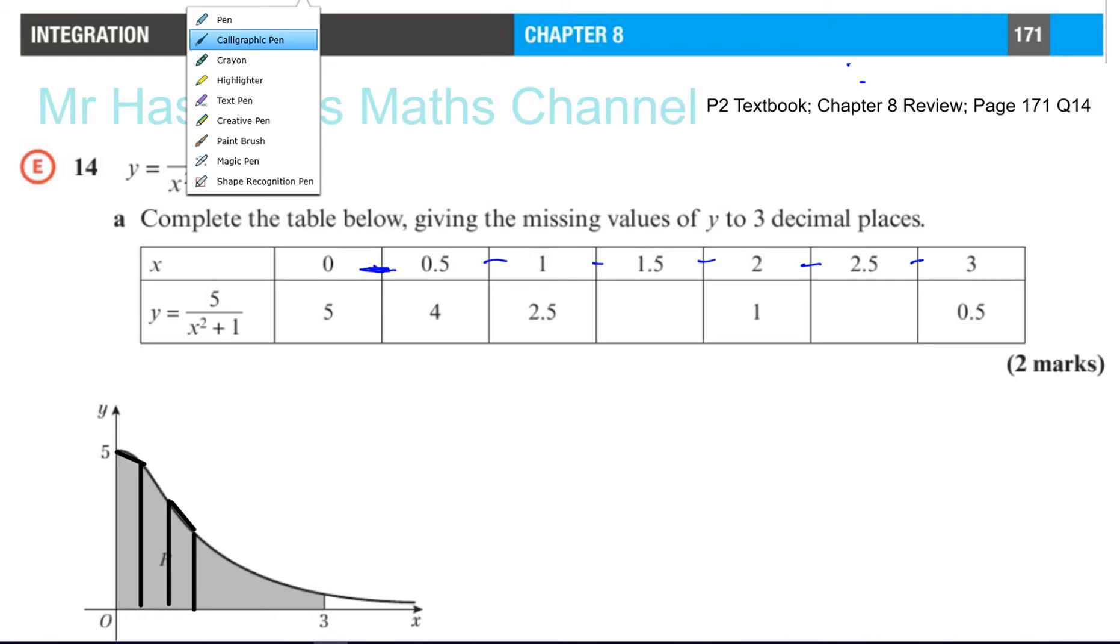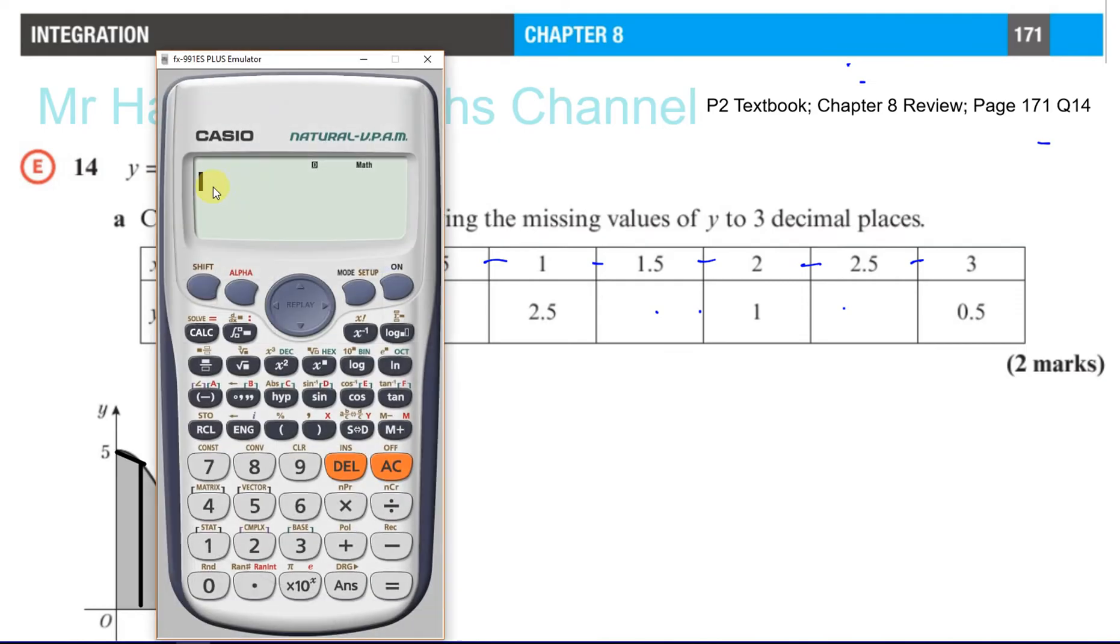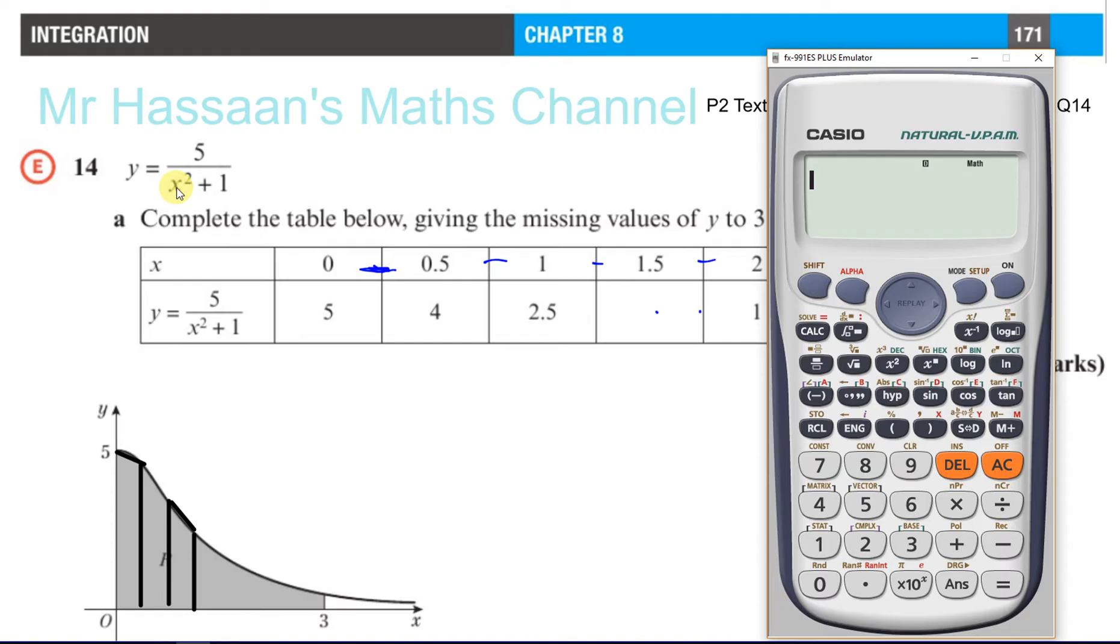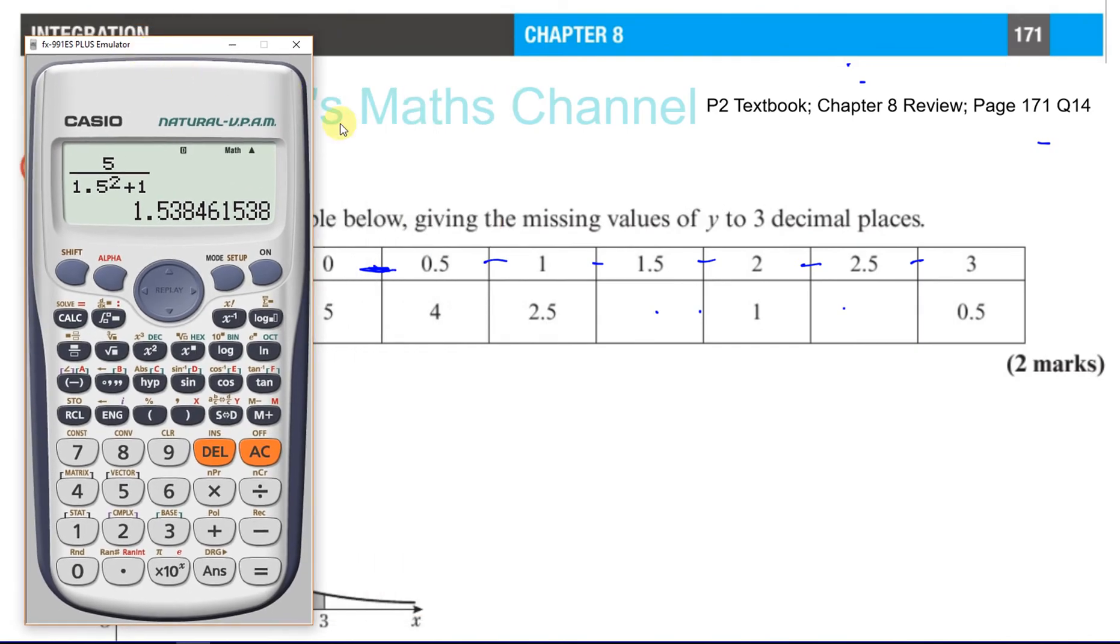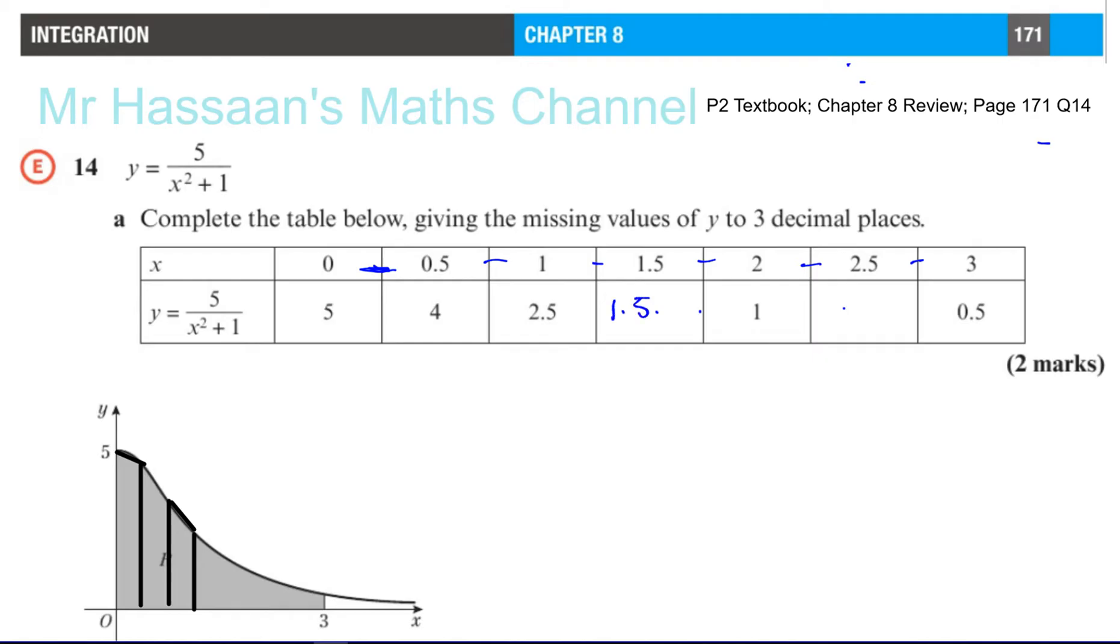So basically what we can say here is that we need to find these missing values here, here and here. And in order to find those missing values, I need to substitute this x value into the equation for y. So basically I've got to put, instead of x, 1.5, so I'll set it up like this: 5 over x squared, so we've got 1.5 squared, plus 1. That's going to give us 20 over 13, and they have rounded them up, or they've told us to use three decimal places, so this is going to be 1.538.